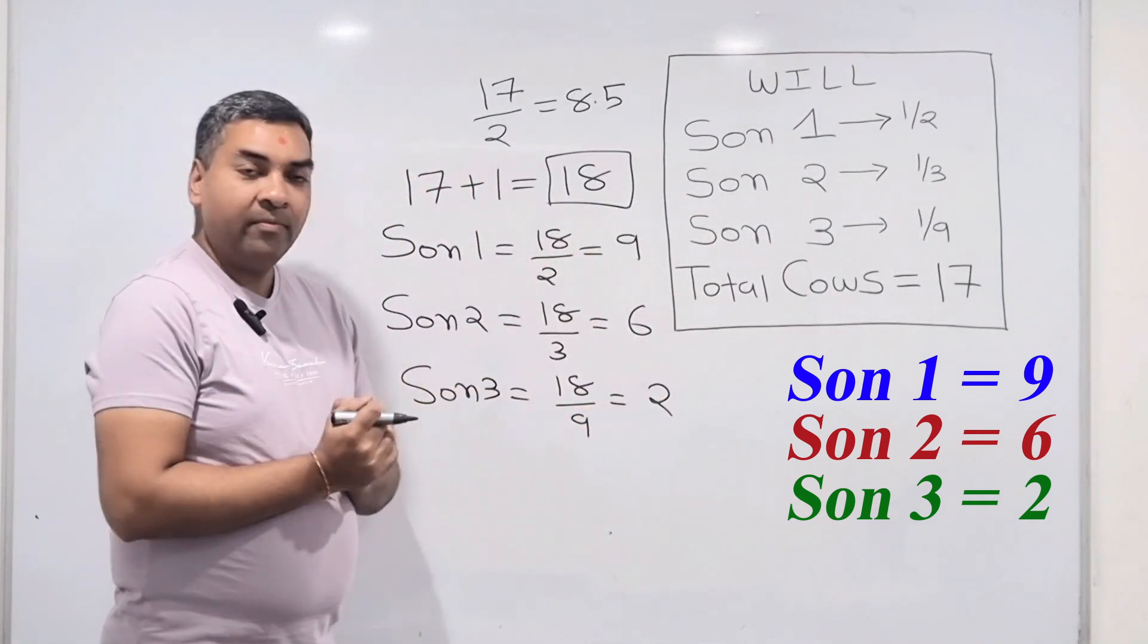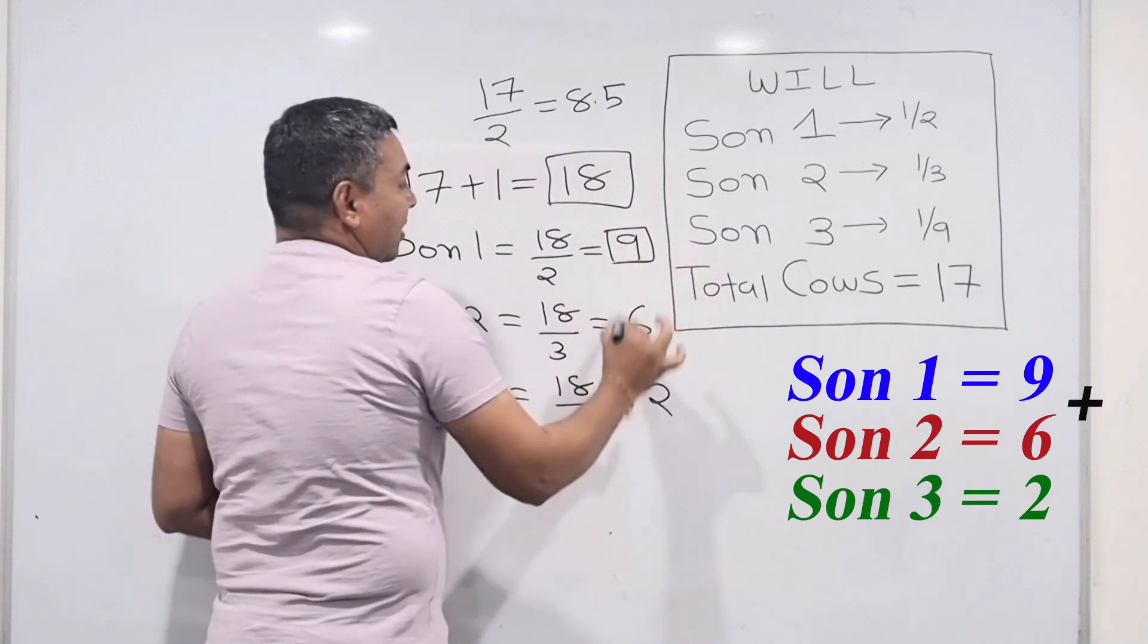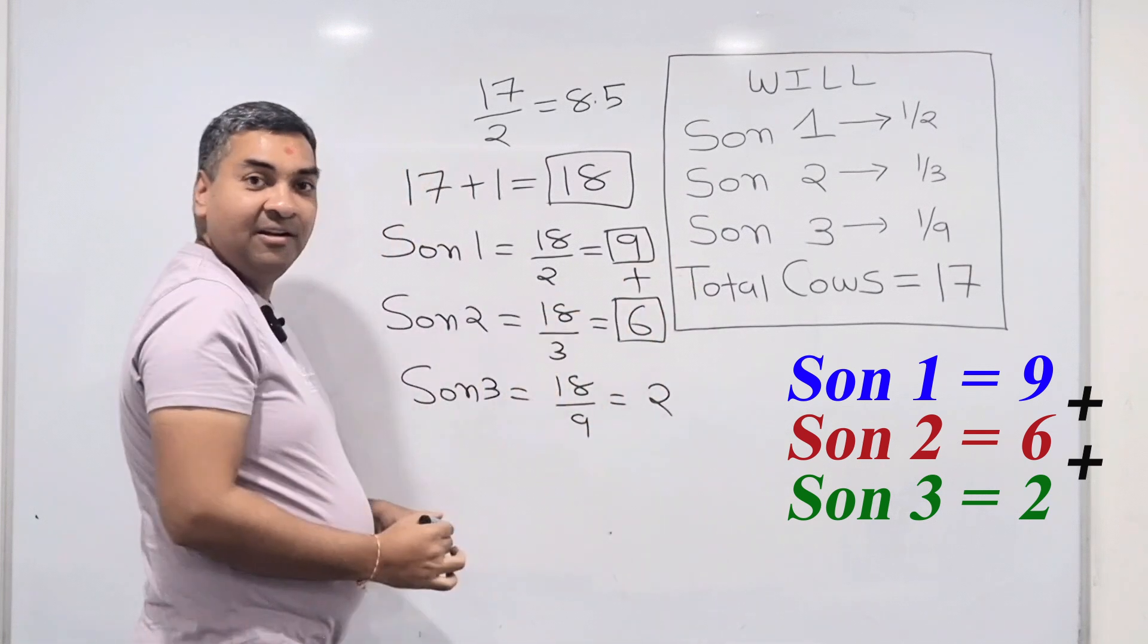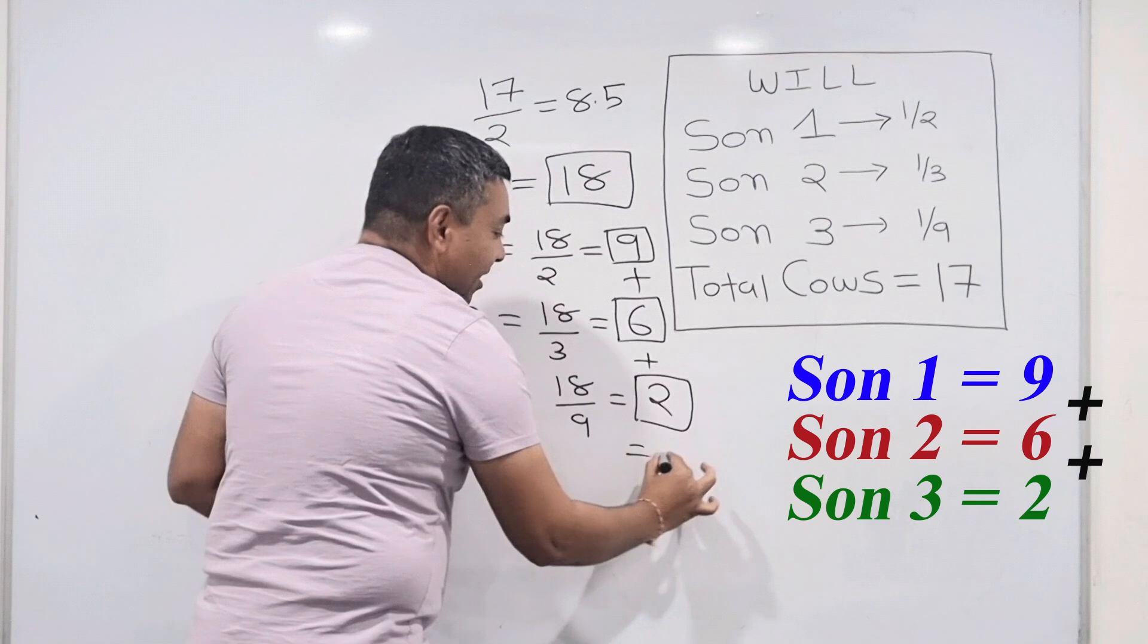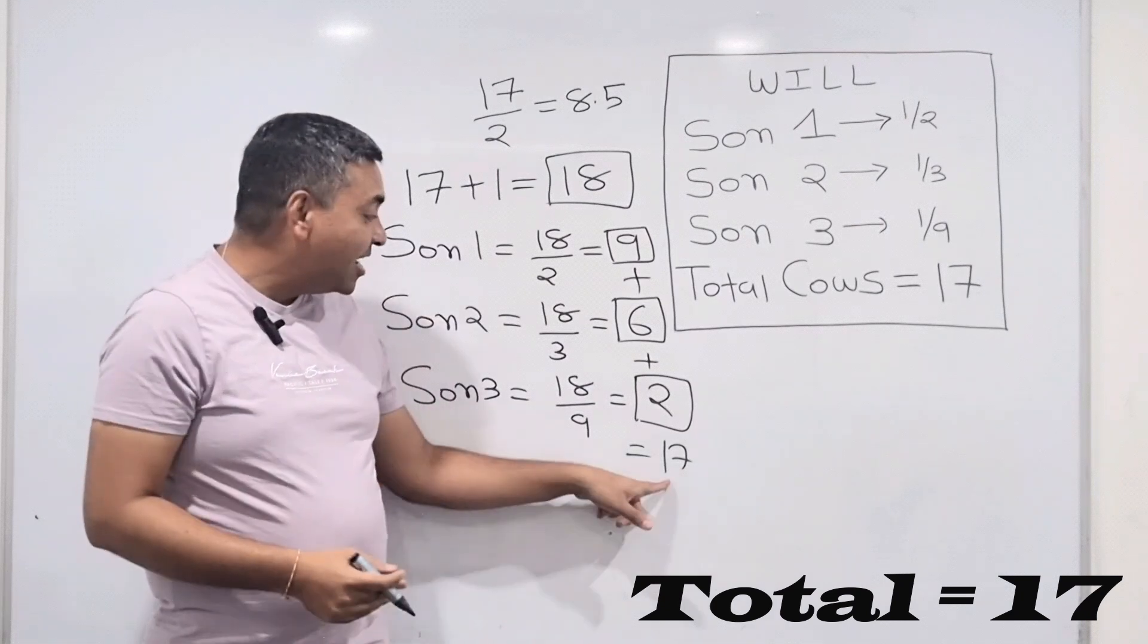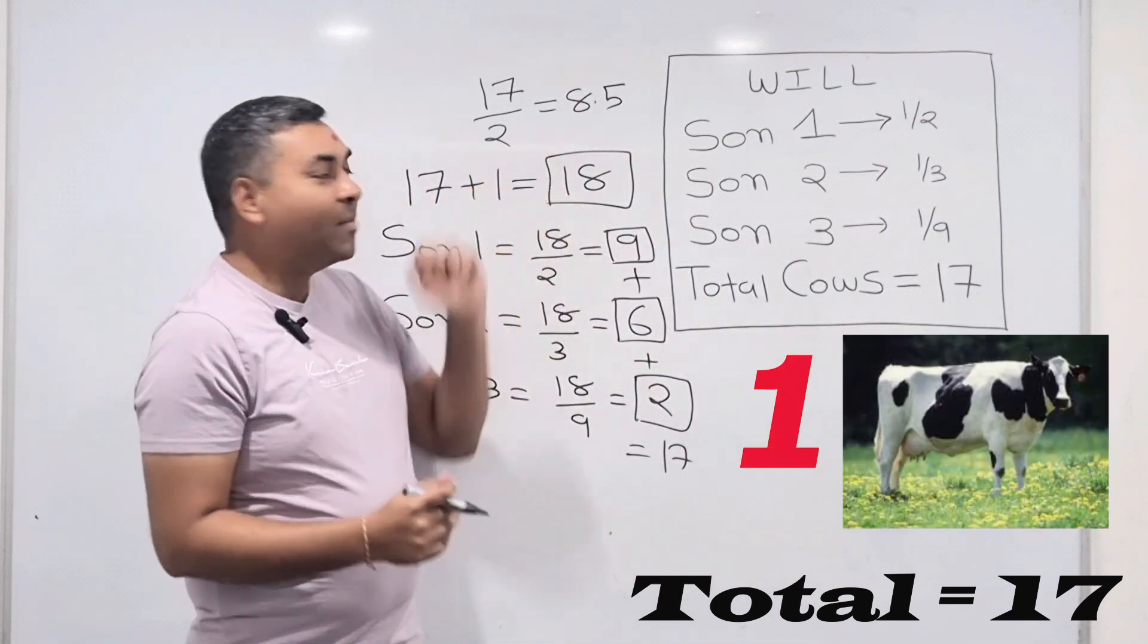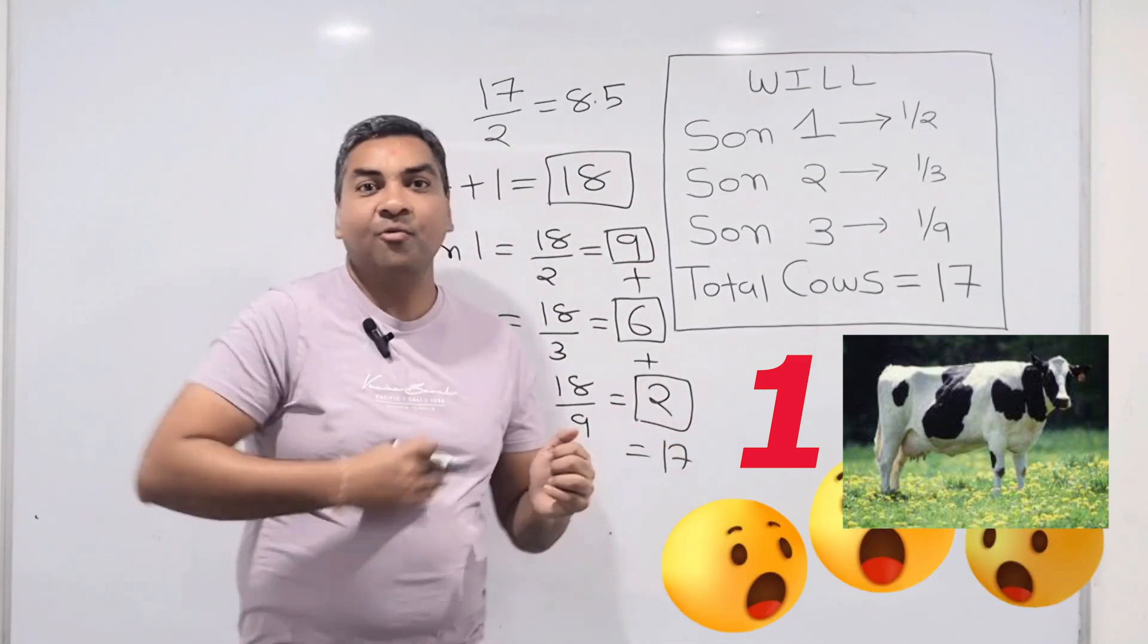Now have a look. This is 9, 9 plus 6 which is 15, 15 plus 2 which is going to be 17. Look at this. All these three sons did get 17. One cow was left over, that was that smart mathematician's cow. So he took his cow and went back to his village, and the whole village was surprised how this problem was solved.